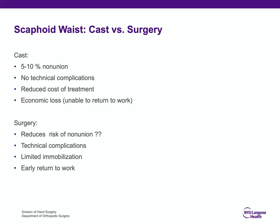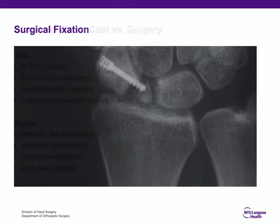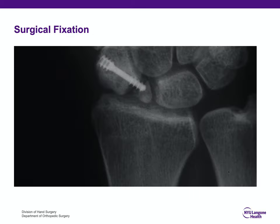With surgery, there may be reduced risk of non-union and possibly faster union, though that has not yet been proven. There could be technical complications as with any surgical procedure. There is limited immobilization, which might be good for someone who cannot tolerate being in a cast for 8 to 12 weeks and allows an early return to work. I don't take lightly the risk of technical complications when discussing surgical procedures for non-displaced scaphoid waist fractures.